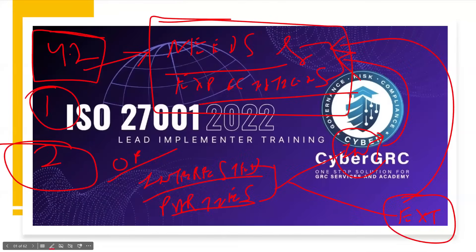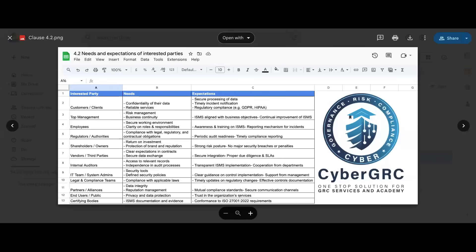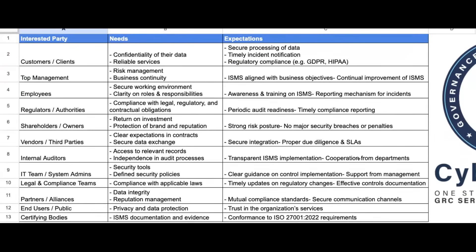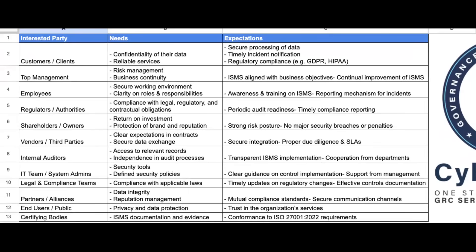What is the use of their expectation — we need it from the security perspective, that is why. This is Clause 4.2 — everybody able to see my screen? This is the interested party and their needs and expectations from an ISMS perspective, from a confidentiality, integrity, and availability perspective.